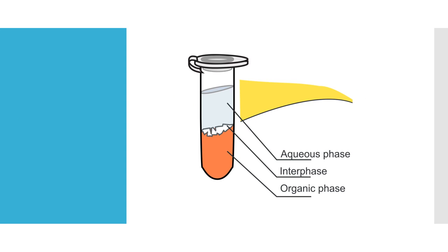This is a depiction of the aqueous and organic phase. As you can see in the following diagram, the organic phase is depicted in orange, and this can be the phenol or chloroform solvent. The aqueous phase, which contains the DNA, is depicted in gray, and the interphase is depicted as a white layer. This interphase contains the precipitated proteins. In order to isolate the DNA, the aqueous phase can be pipetted out into a fresh tube and precipitated using alcohols.